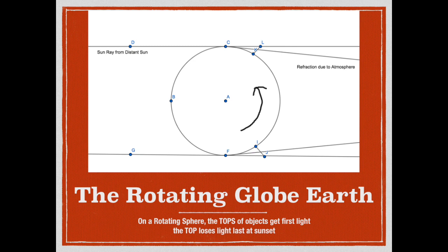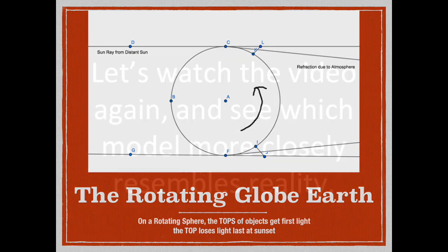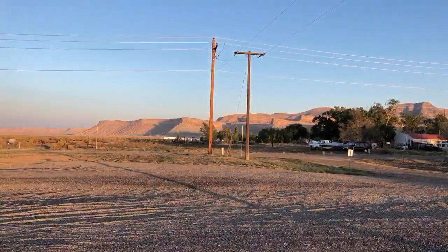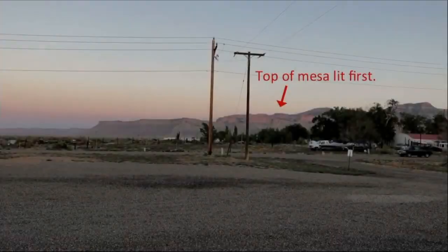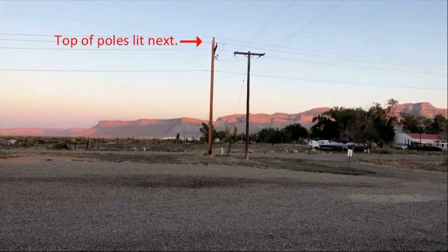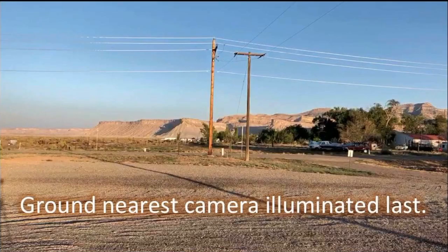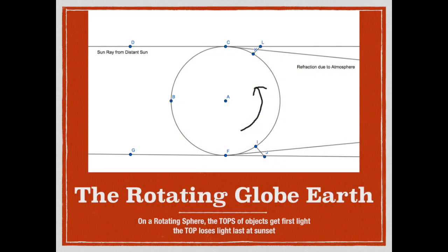Now let's watch the sunrise in Utah again and look at that mesa very carefully. Does it light up before the ground at the base of the camera? Well, by gosh, it sure does. The light comes from the top and works its way down, just as would be predicted on a spherical rotating Earth.